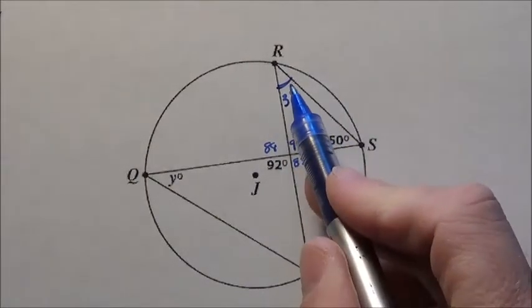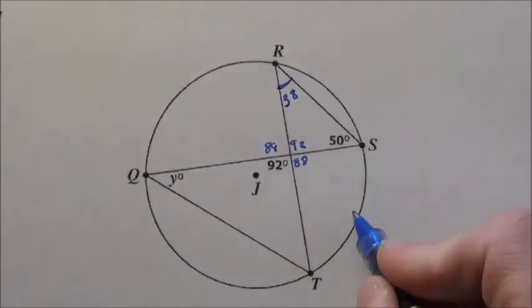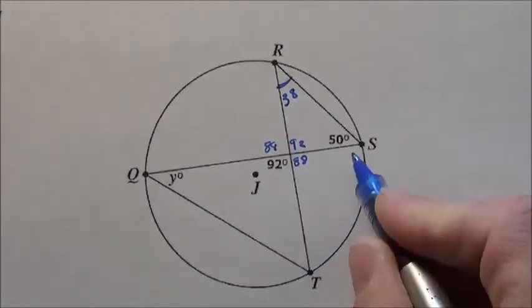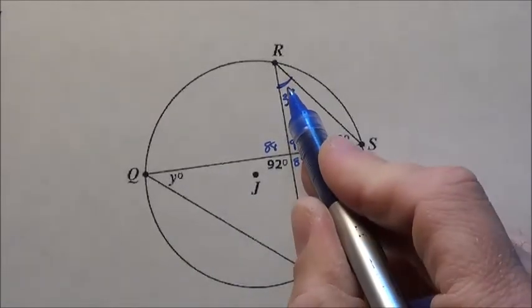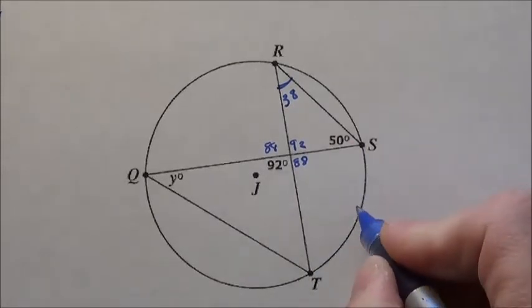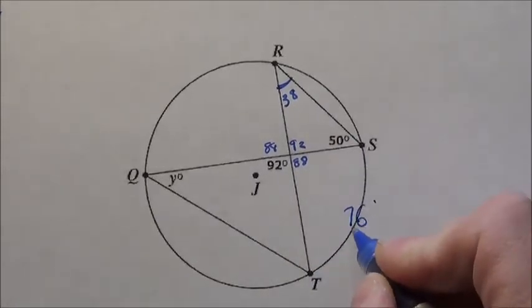Now if that's 38 degrees right there and that's an inscribed angle, this arc over here is going to be double that amount, because remember an inscribed angle is half of what the arc is. So the arc is going to be 76 right here.